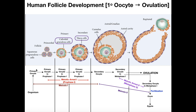When we start off in folliculogenesis we have cells called squamous pregranulosa cells, which develop into what we call a primordial follicle. The primordial follicle then develops into a primary follicle, then a secondary follicle, then what we call a graafian follicle — the mature follicle — and from there it ruptures, which is ovulation. That rupture of the graafian follicle is ovulation.